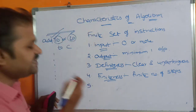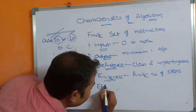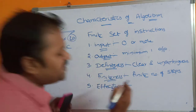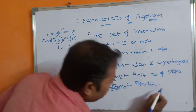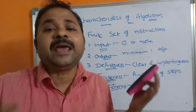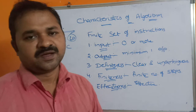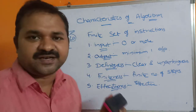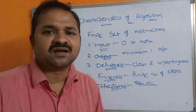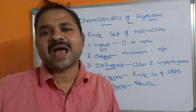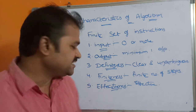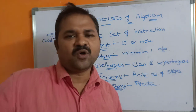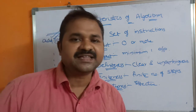The last characteristic is effectiveness. Effectiveness means each step of an algorithm must be effective — that is, we must be able to solve the problem with paper and pencil in a finite amount of time. For example, if our target is to perform multiplication of two matrices, we must be able to solve that problem using pen and paper in a finite amount of time. Every algorithm must satisfy these five properties or characteristics. In the next video, we will discuss various issues to consider when studying algorithms.